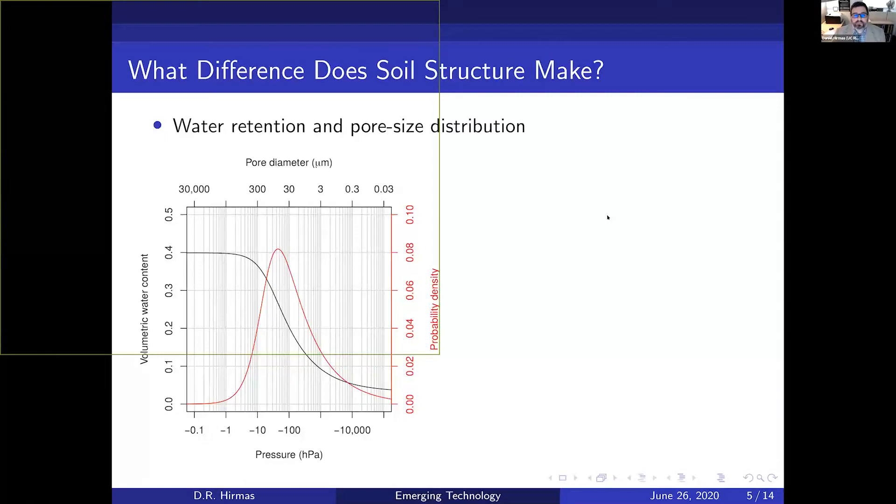So why is this important? What difference does this make? It makes a very large difference on water retention and pore size distribution. Water retention is essentially the amount of water that a soil can hold under a given force. On the y-axis is the amount of water in the soil; on the x-axis is the potential energy it takes to pull that water from the ground. The derivative of that curve is a distribution of pore sizes. For a non-structured soil material, pore sizes are relatively small.